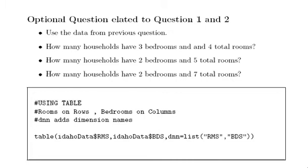It is an optional question related to questions one and two, and uses the data from the previous question. Using the Idaho Dataset: how many households have three bedrooms and four rooms in total? How many have two bedrooms and five rooms? And how many have two bedrooms and seven rooms altogether?